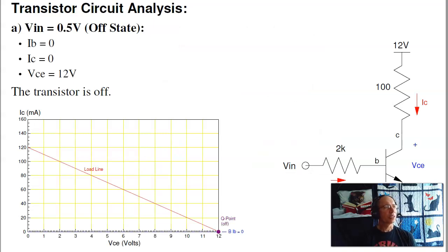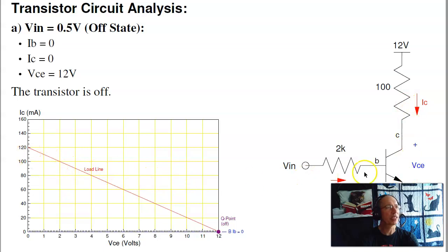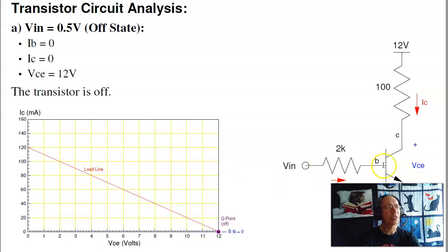To see how the different states work, there's a thing called load lines — we do a lot of load lines in this class. For this circuit, the open-circuit voltage when current is zero is 12 volts — that's one point on the load line. If I short VCE to zero volts, I get 12 volts over 100 ohms, which is 120 milliamps — that's the other point. As VCE varies, I can operate anywhere on this load line. Transistors dump voltage anywhere between 12 volts and zero. In the off state, the current is zero and the voltage is 12 volts — and since power is volts times amps, the power is zero, so the transistor doesn't have to worry about dissipating heat.